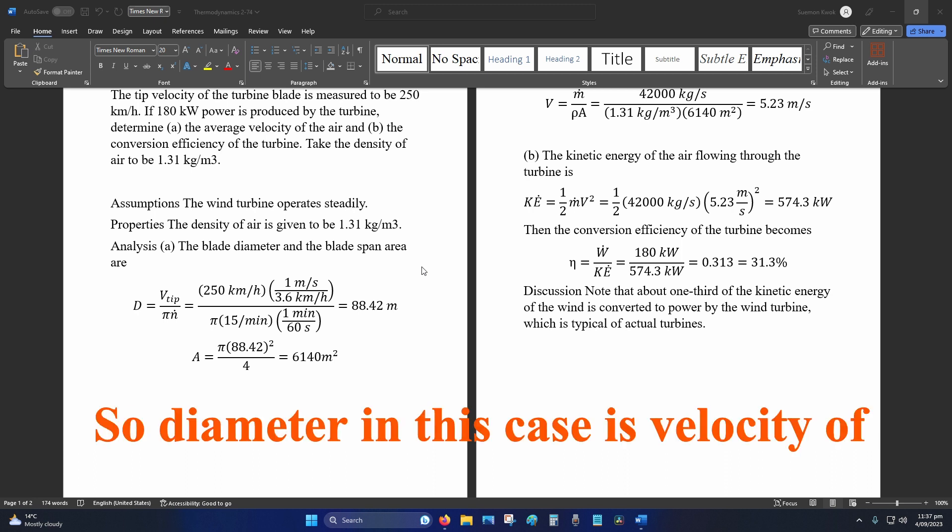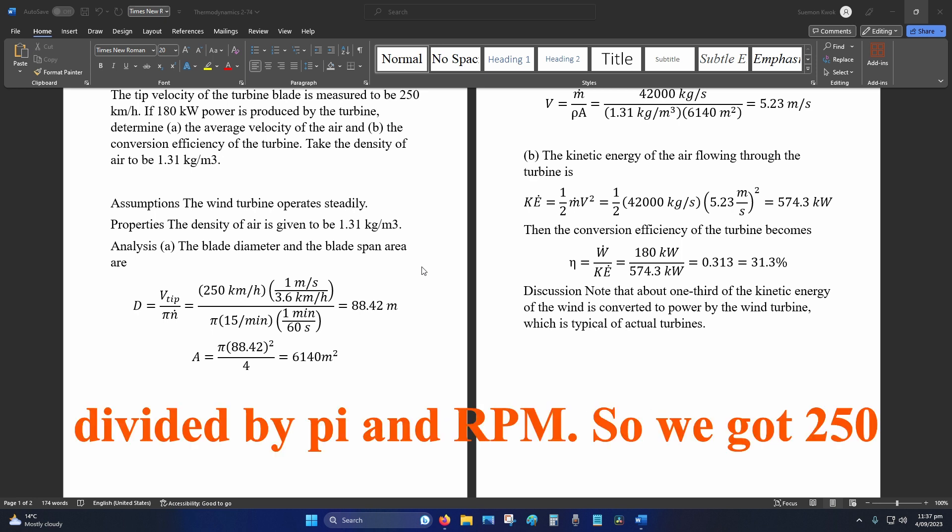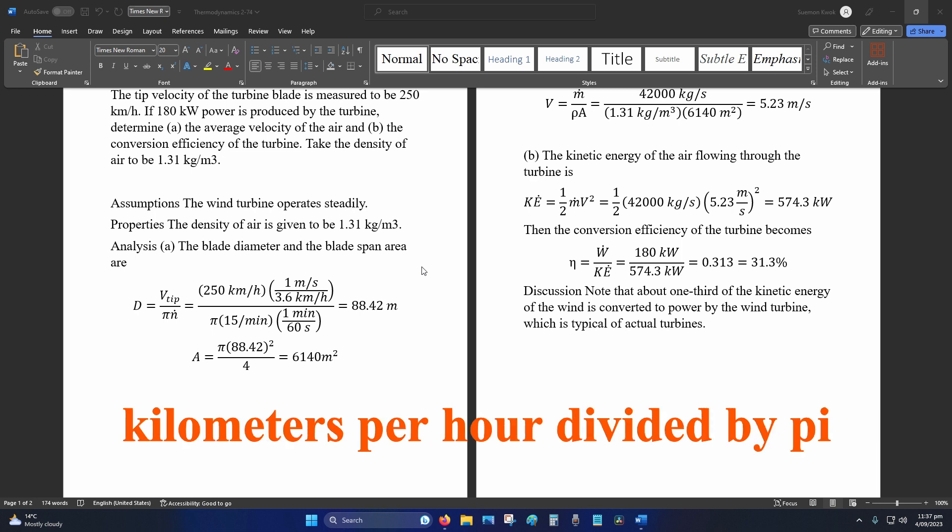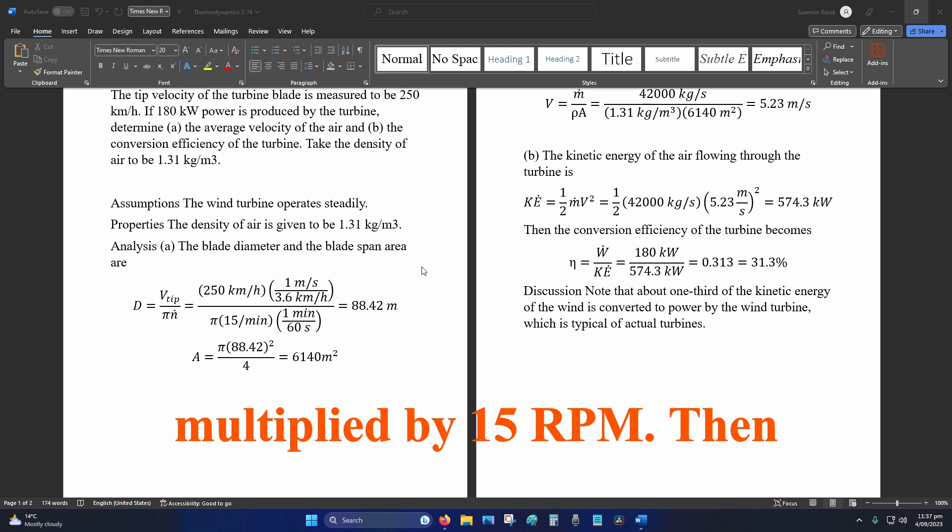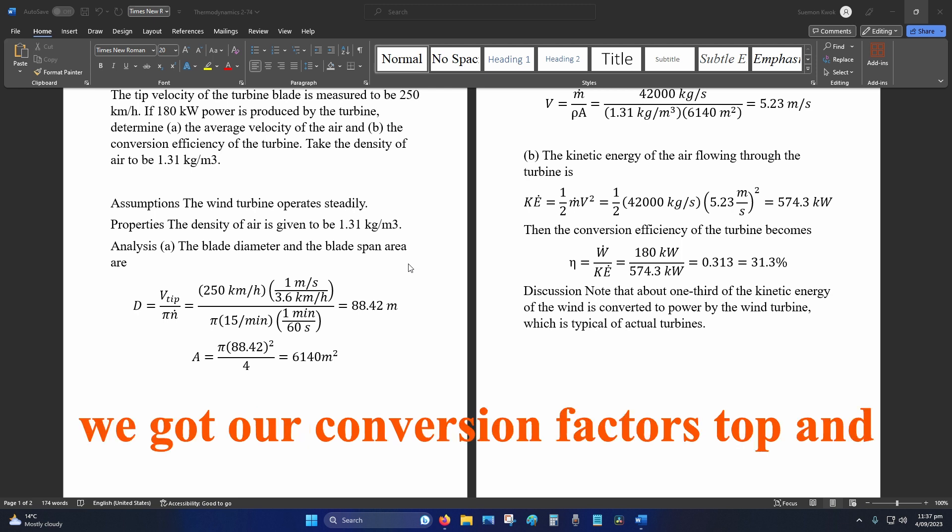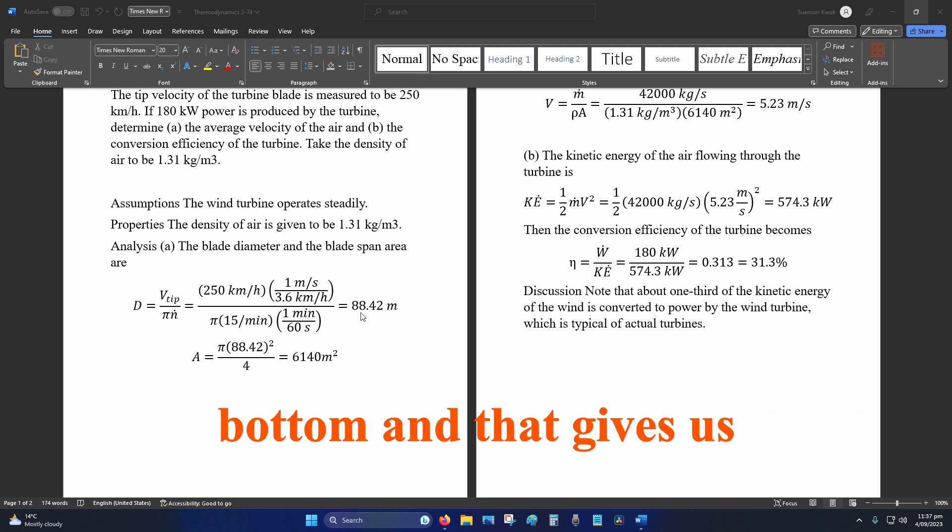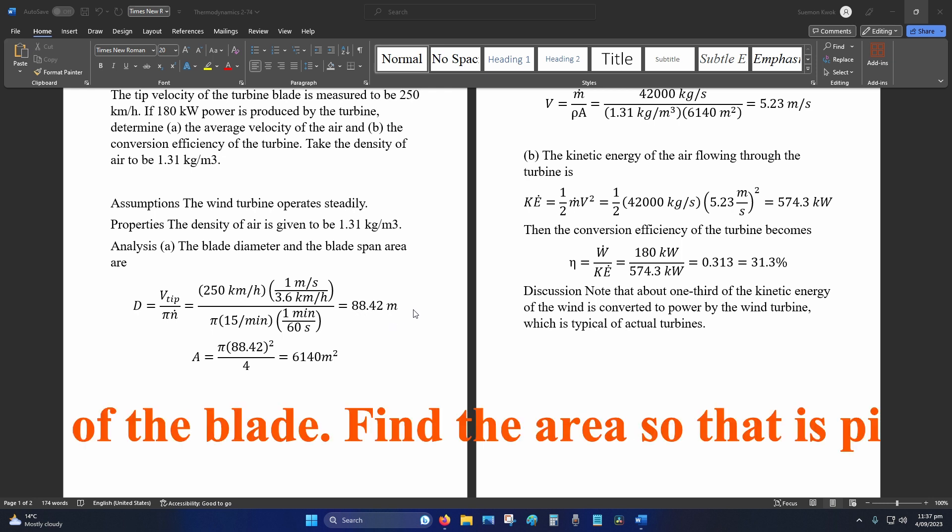The diameter is the velocity of the tip divided by pi times RPM. So we have 250 kilometers per hour divided by pi times 15 RPM. With the conversion factors applied, that gives us a diameter of 88.42 meters for the blade.